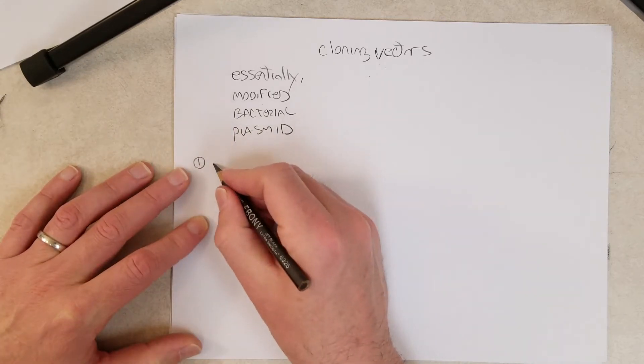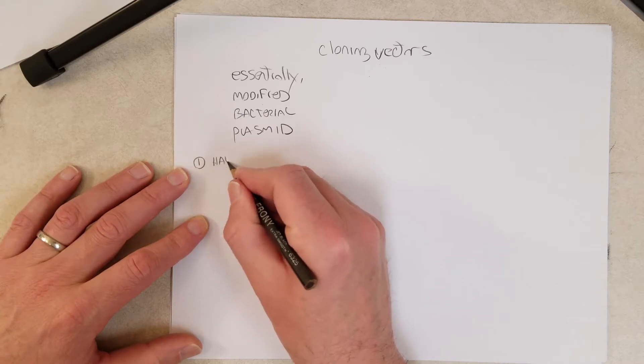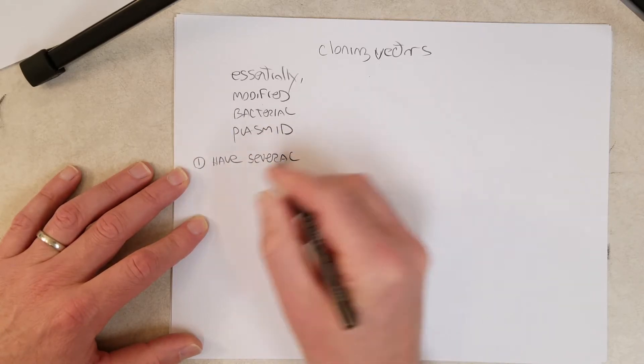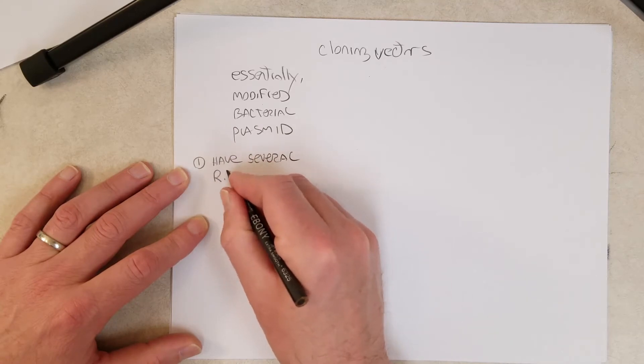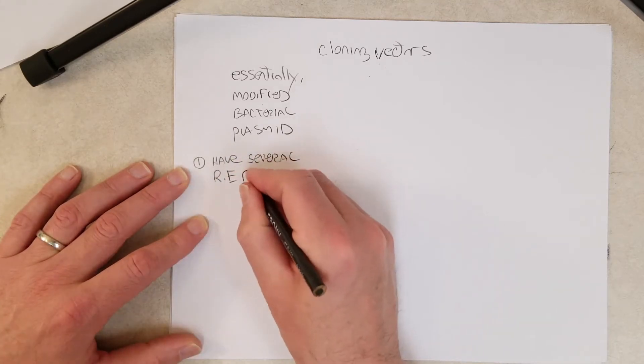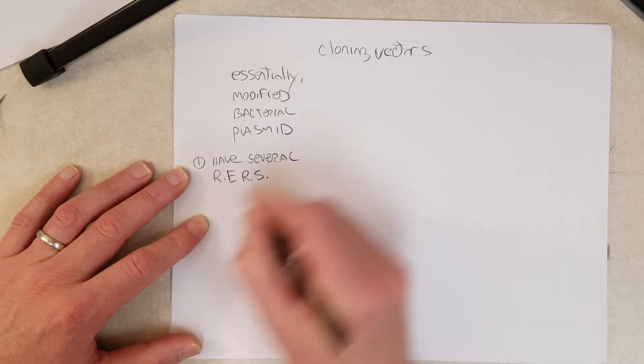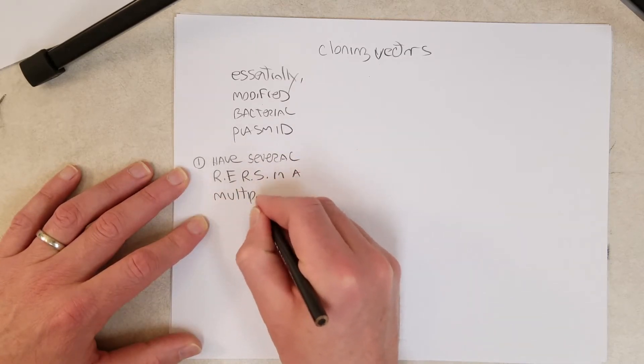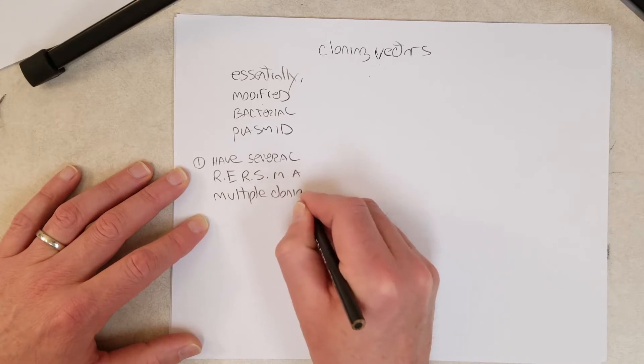They must have, or ideally, they have several restriction endonuclease recognition sequences in a multiple cloning site.